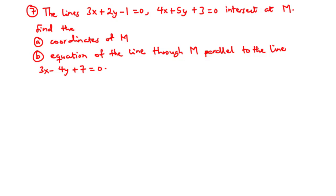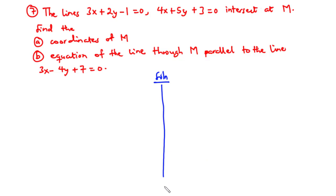For question number 7, the lines 3x plus 2y minus 1 equals 0 and 4x plus 5y plus 3 equals 0 intersect at point M. We need to find: (a) the coordinates of M, and (b) the equation of the line through M parallel to the line 3x minus 4y plus 7 equals 0.